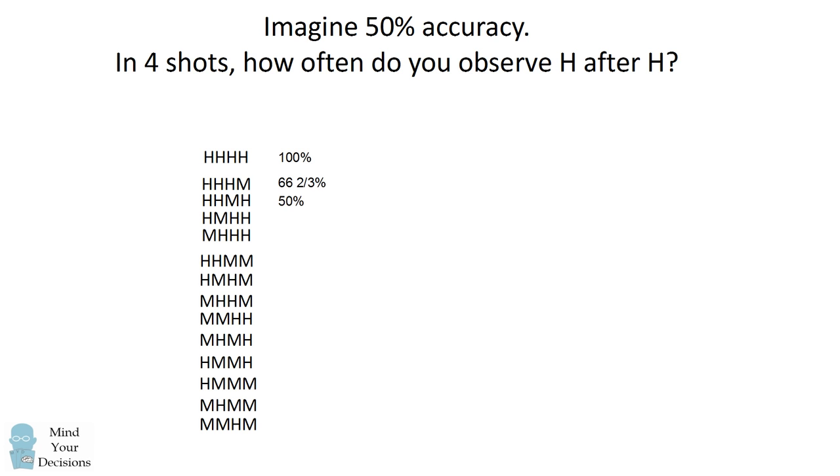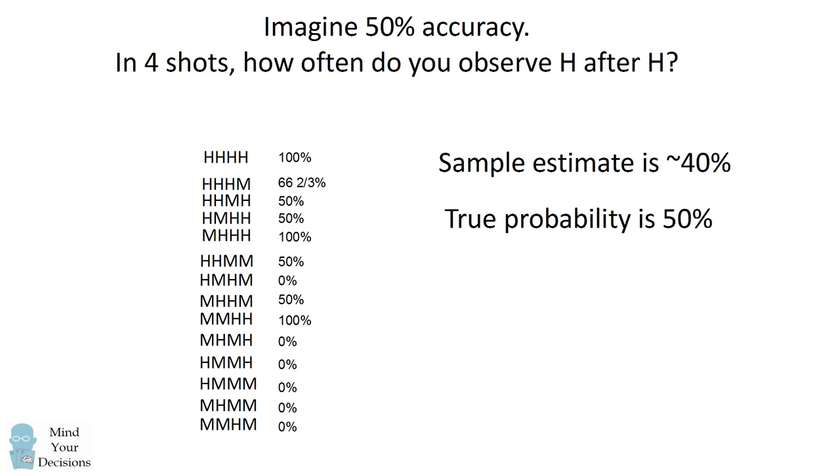So I can compute this same type of probability in each of the different trials. So what we're doing is we're looking at the empirical chance that we're going to observe a shot being made after a shot already being made. Now these 14 trials are equally likely and when you average this out, we find a sample estimate of only about 40% that we observe a hit being made, a shot being made after a shot is already made. And we know this is wrong because we know the true probability is 50%.